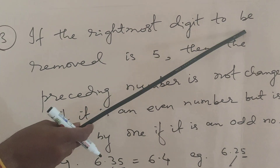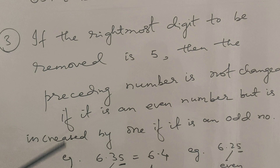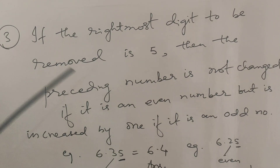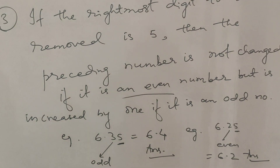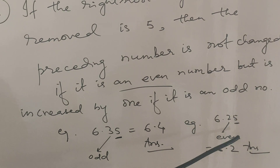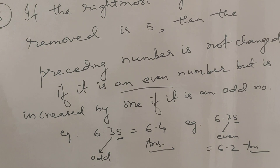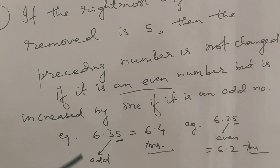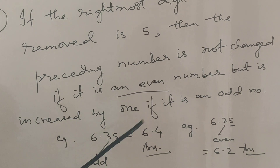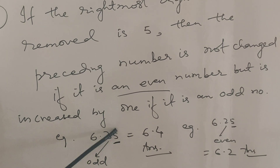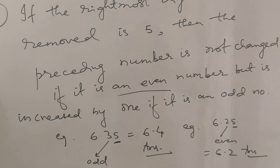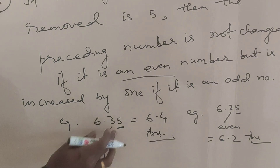If the rightmost digit to be removed is exactly 5, there are two scenarios: (1) If the preceding number is even, it remains unchanged — for example, 6.25 rounded becomes 6.2 (since 2 is even). (2) If the preceding number is odd, it is increased by 1 — for example, 6.35 rounded becomes 6.4 (since 3 is odd, we add 1).